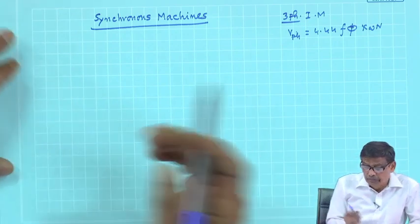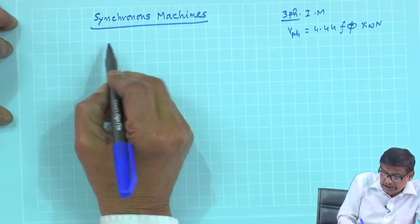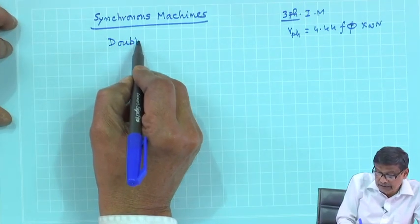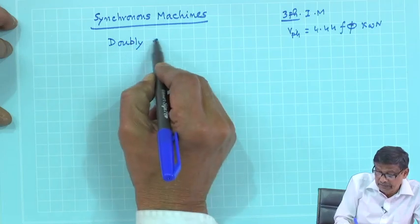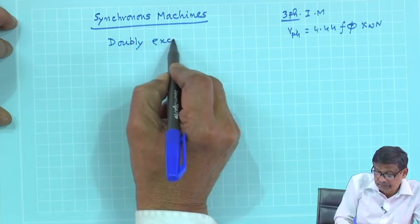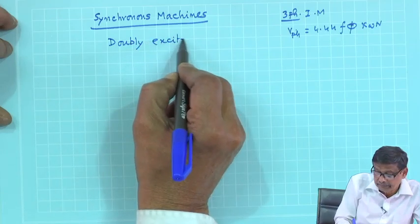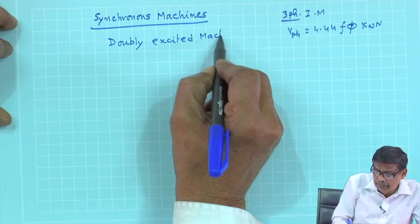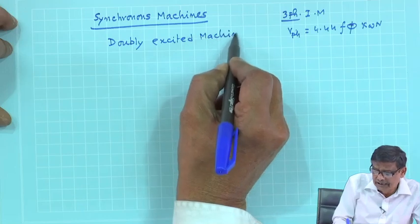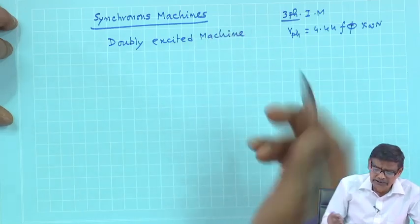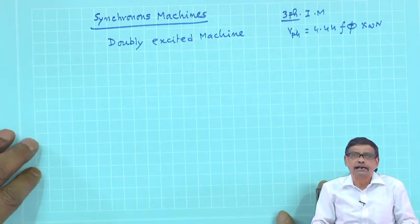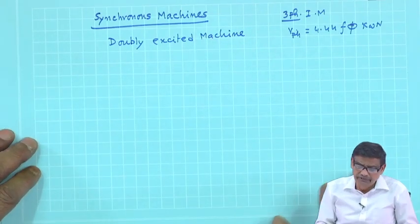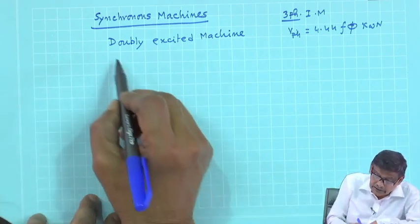First of all, a synchronous machine is a doubly excited machine. It can operate both as a motor and as a generator. We will first take up the generator case.